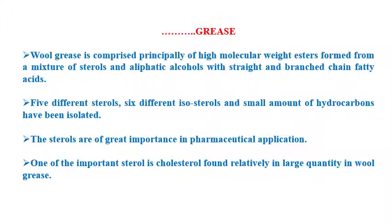Wool grease is comprised principally of high molecular weight esters formed from a mixture of sterols and aliphatic alcohols with straight and branched chain fatty acids. Five different sterols, six different isosterols, and small amounts of hydrocarbons have been isolated from this grease. The sterols are of great importance in pharmaceutical applications. One of the most important products isolated from this grease is lanolin, which has many pharmaceutical applications. Cholesterol is one important sterol found in relatively large quantities in wool grease.